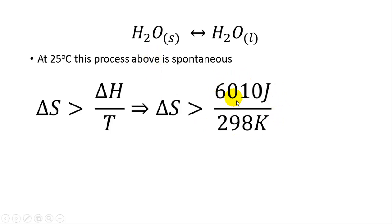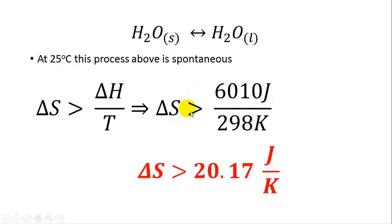The problem tells us that the delta H of fusion is about 6,010 joules for this reaction. At a temperature of 25 degrees, delta S has to be greater than delta H over T — doing this math, that comes out to about 20.17 joules per Kelvin. Those are the units of entropy, delta S.